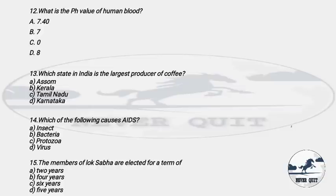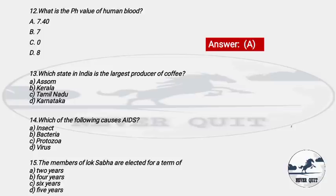Question 12: What is the pH value of human blood? Options: A) 7.40, B) 7, C) 0, D) 8. The right answer is option A — 7.40. This is a very important question that has been asked in many exams. The exact pH value of human blood is 7.4.